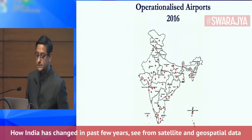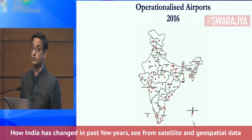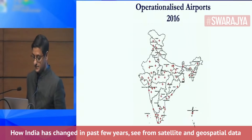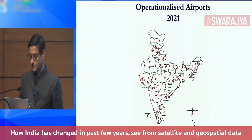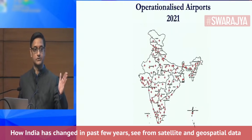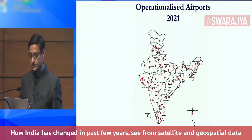Here is the number of operational airports in India in 2016, before the UDAN scheme. This is what it looks like now. You can see dramatic increases in all kinds of infrastructure.